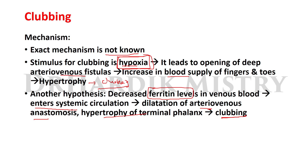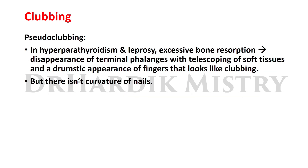Pseudo-clubbing occurs in hyperparathyroidism and leprosy, where excessive bone resorption causes disappearance of the terminal phalanx with telescoping of soft tissues, producing a drumstick appearance resembling clubbing. However, it is not actual clubbing because there is no curvature of the nail — in true clubbing, transverse and longitudinal nail curving is present, which is absent here.